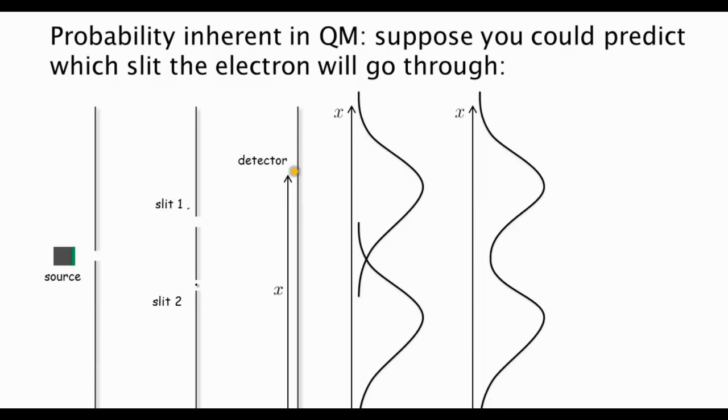Well, actually, if we could, then we could repeat what we were trying to do in the previous experiment with the light to detect which slit the electron went through. Except now we don't need the light at all because the initial conditions tell us which slit it went through. And so if we could predict which slit the electron went through, then again, we wouldn't get an interference pattern.